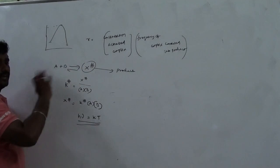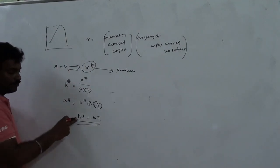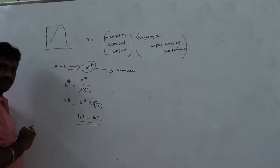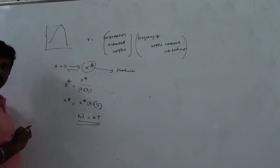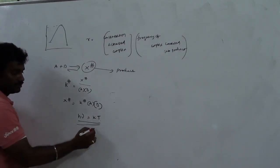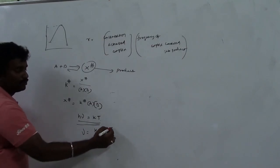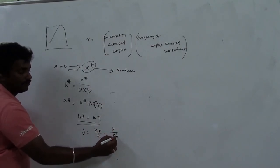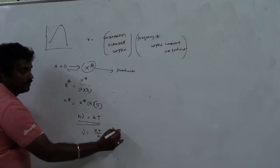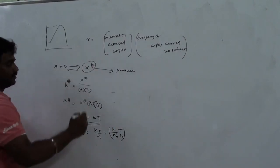The hν energy — kT — is gained from the reactant, and bond breaking occurs on both. So from this, ν equals kT divided by h, where k is the Boltzmann constant, which equals R divided by Nₐ. So the vibrational frequency ν = kT/h. This is your expression for the frequency.